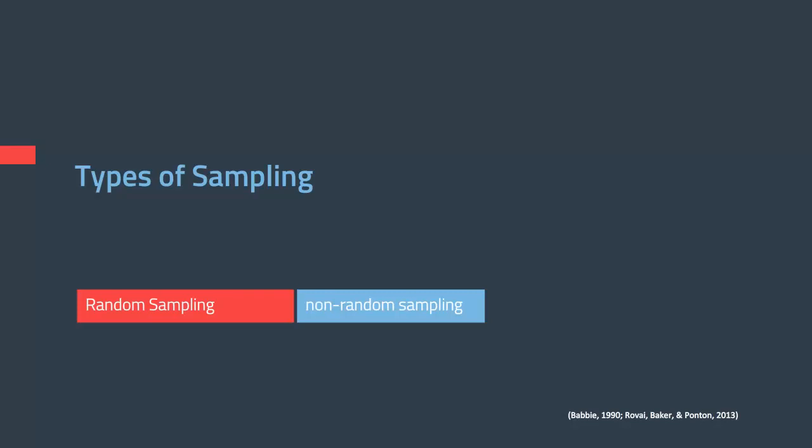In random sampling, there are three types commonly used: simple random sampling, stratified random sampling, and cluster sampling. Then there is also non-random sampling, which is probably the most commonly used, especially in educational or social science research.